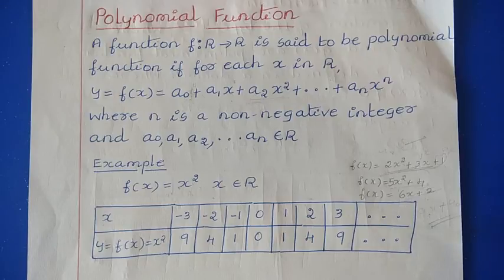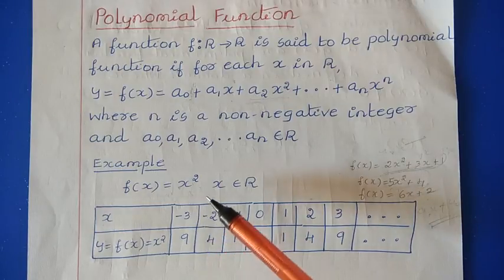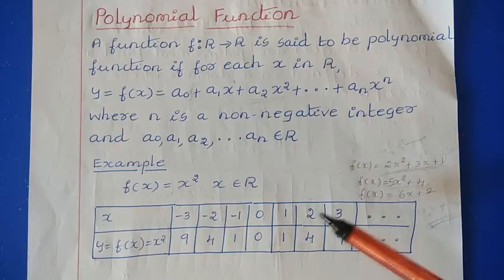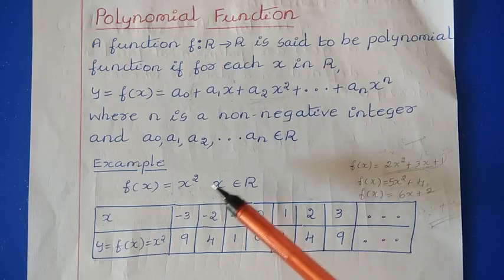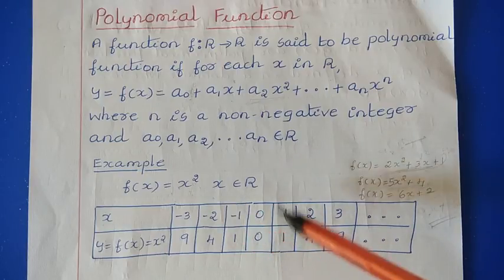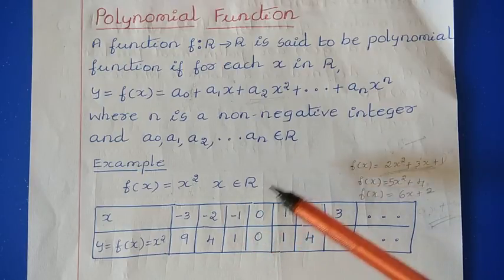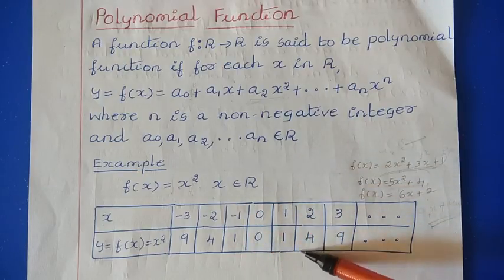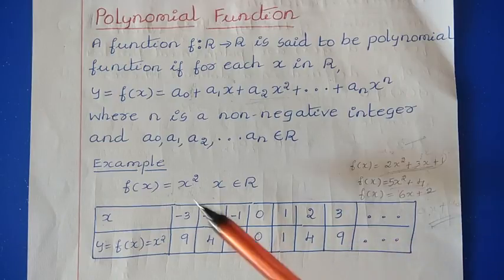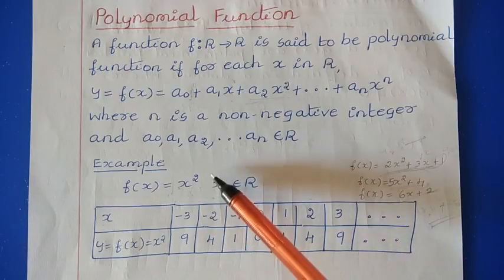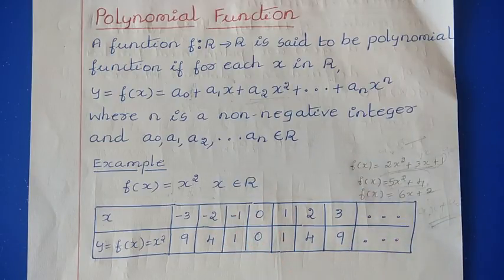For the example f(x) = x squared, whatever real number value we give, we always get a positive answer — because the square of any number is always positive, whether it is negative or positive.